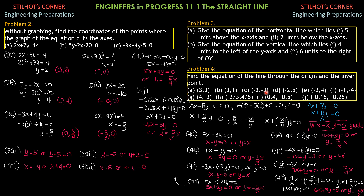For 4C, y1 = -3, x1 = 3: -3x - (-3)y = 0, so -3x + 3y = 0. Divide by 3: -x + y = 0, or y = x. For 4D, y1 = 5, x1 = -2: 5x - (-2)y = 0, so 5x + 2y = 0. This is the answer, or y = -5x/2.